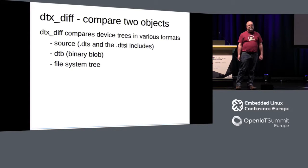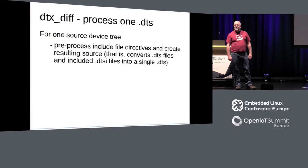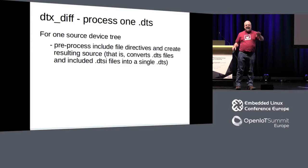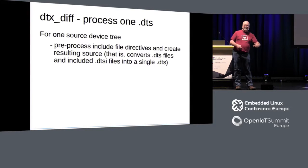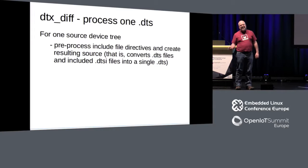There are a lot of different stages in the lifecycle of the device tree where you might want to look at what the device tree looks like at that point. DTX diff gives you the ability to look at device trees in the various formats they can be in — the source, the compiled binary, or on the target in the sysfs filesystem. A nice side effect is that if you run one device tree through DTX diff, it'll do all the preprocessing and out pops the final result — what it's really going to look like on your target system.